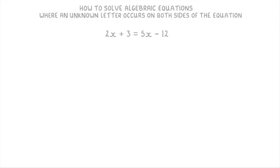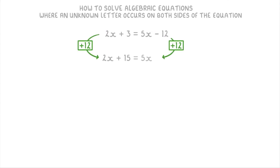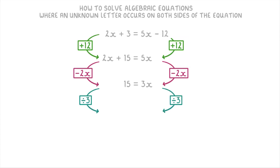It's up to you which side you put each on, but in this case it'll probably be easier to put the x's on the right-hand side because there are already more x's on the right than the left. So if we want the x's on the right and the numbers on the left, we need to get rid of the minus 12 from the right and the 2x from the left. This means adding 12 to each side to get 2x + 15 = 5x, then taking away 2x from each side to get 15 = 3x. Lastly, dividing both sides by 3 gives us x = 5.